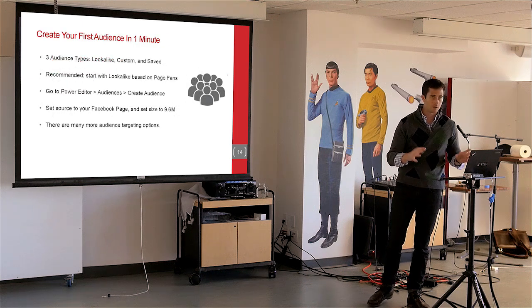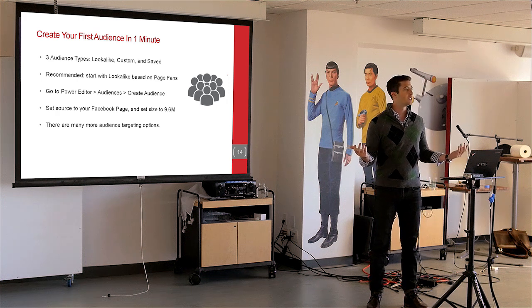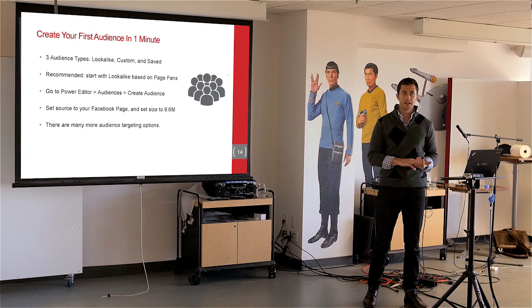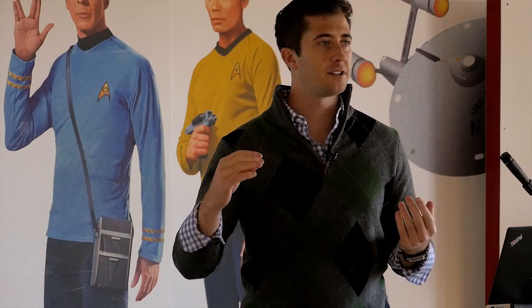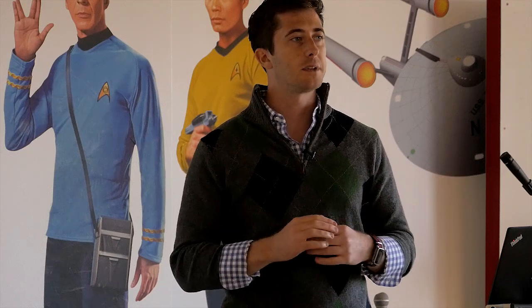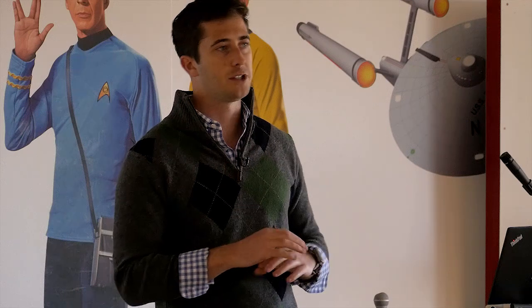Audience creation is usually one of the biggest stumbling blocks for people — they just don't know where to start. There are three types: a lookalike, a custom, and a saved. A saved audience is where you're saying, 'I want to target people who are specifically women between the ages of 29 and 36 in the LA area with all these other characteristics.' Using a custom audience and a lookalike audience is usually the best place to start. I recommend using the lookalike based off your existing page fans just to get started very quickly.